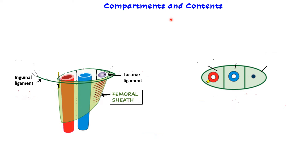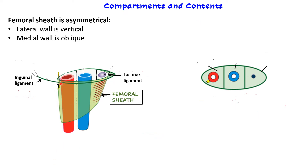The femoral sheath is divided into three compartments. Its shape is funnel-like but asymmetrical — the lateral wall is vertical and longer compared to the medial wall, which is shorter and oblique.